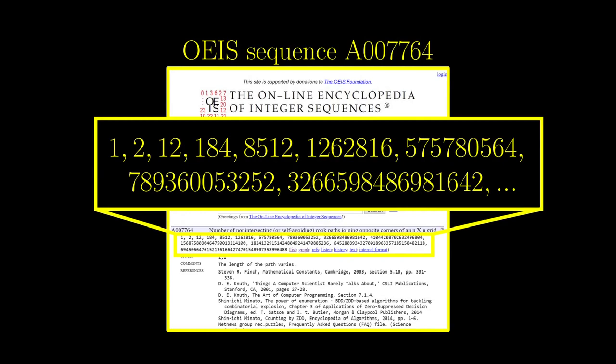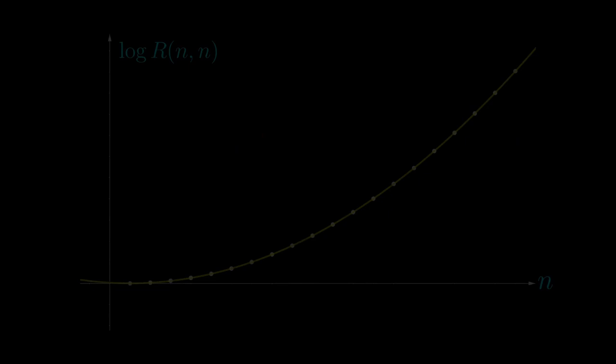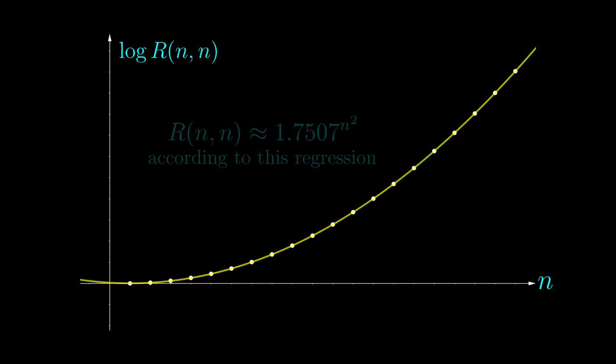In fact, there is an OEIS page dedicated to this particular problem, recording the nth number in the sequence as the number of self-avoiding walks in an n times n grid. And here, you can see that the logarithmic plot of the sequence behaves quadratically. So the growth of the sequence is more than exponential.